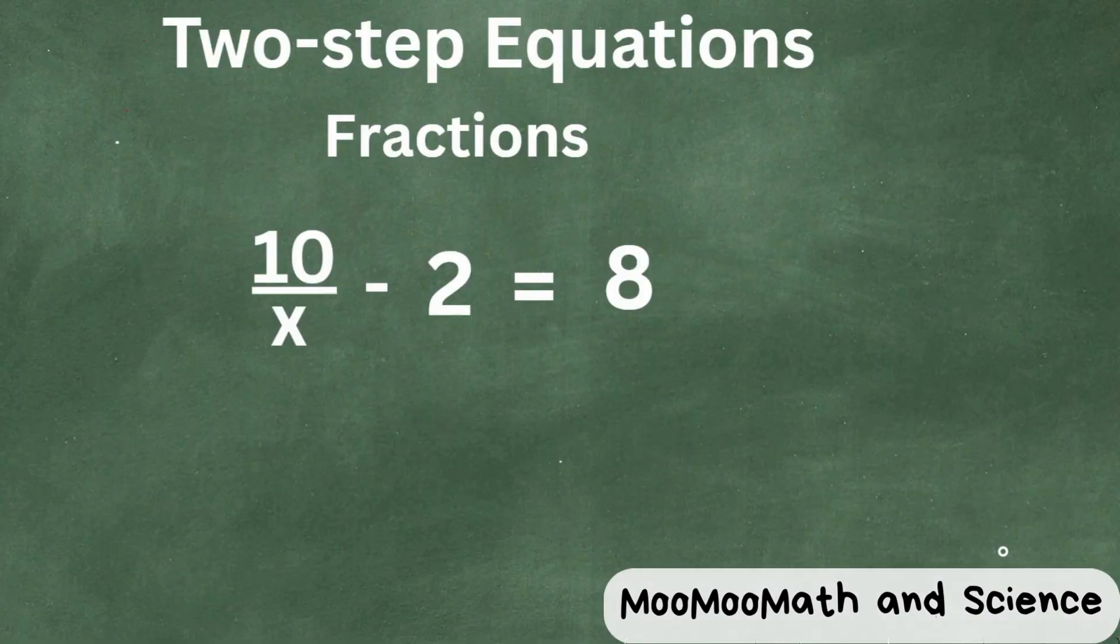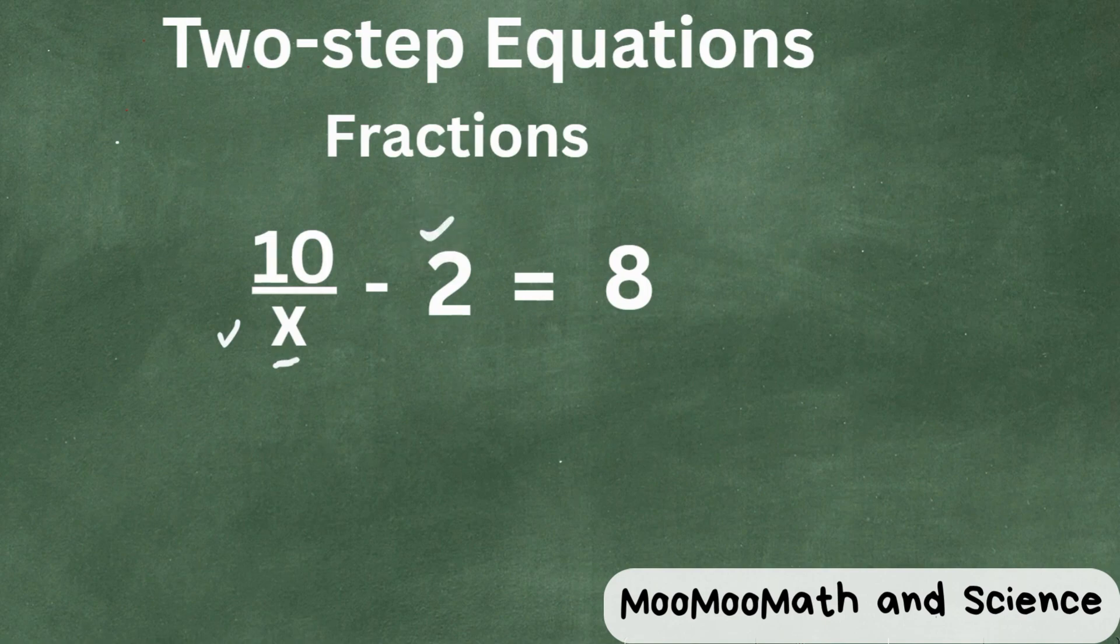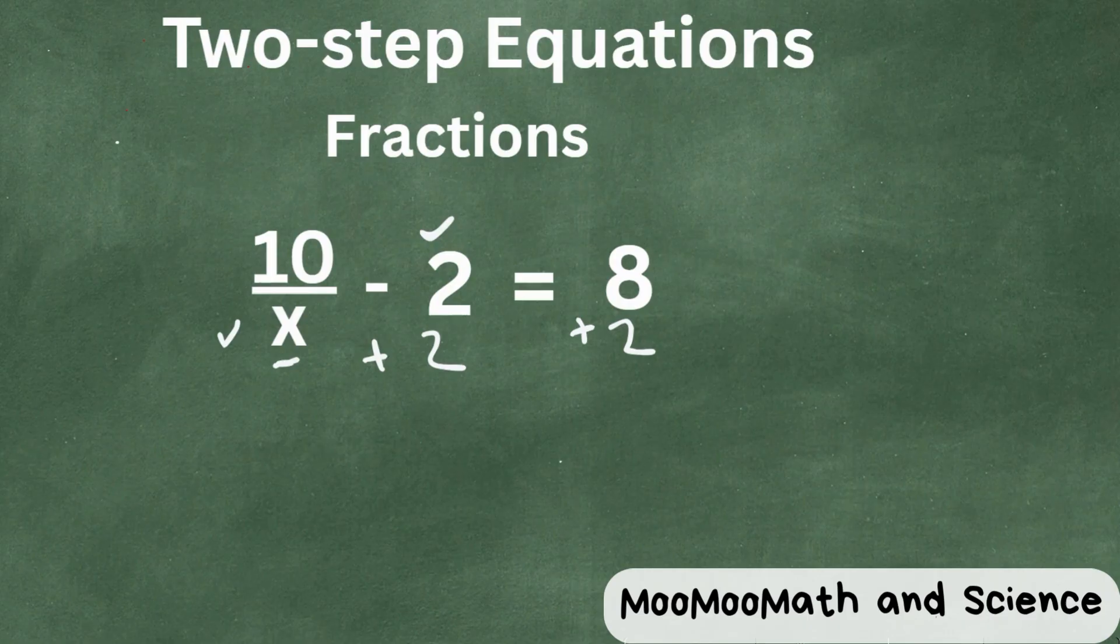In this example problem, we have x on the bottom. So let's go ahead and get started. The first thing we need to do, remember, we want to get x by itself. So we can move this 2 to the other side by adding 2 to both sides. When we do that, a positive and negative 2, they cancel. So that gives us 10/x equals 8 plus 2, which is 10.